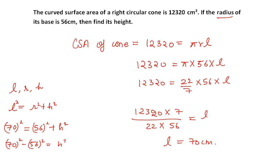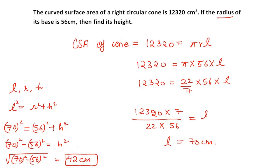So h² = 70² − 56². Putting in all the values and taking the square root gives us h = 42 centimeters as the answer. This is the answer to question number four of the standard paper. Thank you for watching, and stay tuned for more such videos.